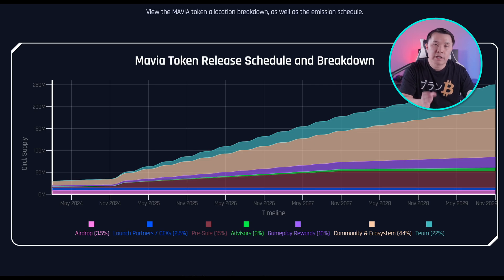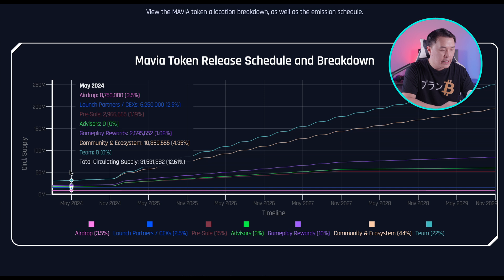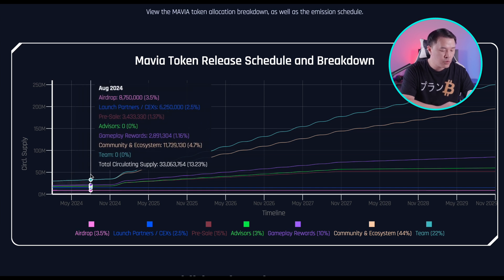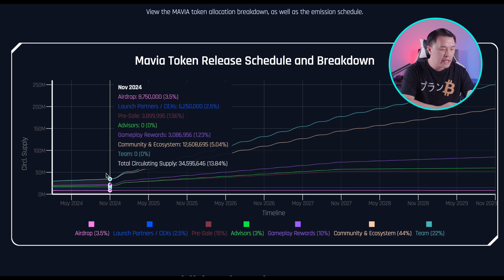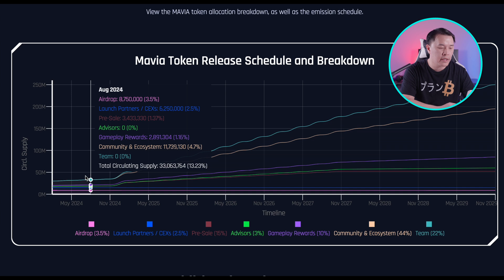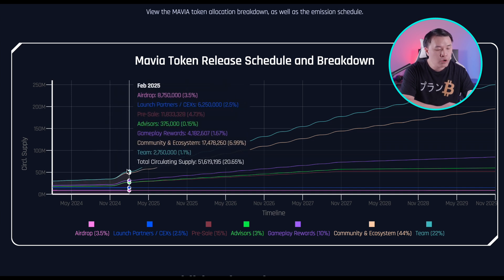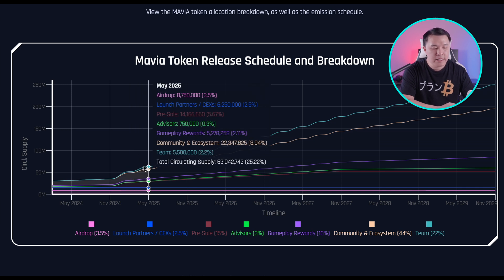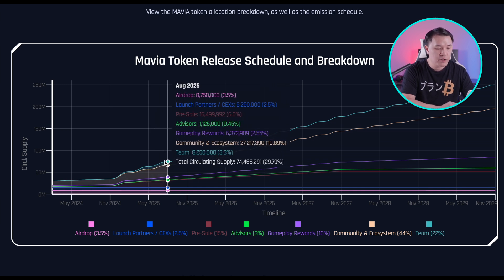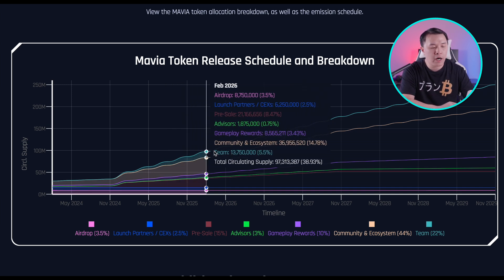Looking at MAVIA's emission schedule, I really like that they are transparent. From May 2024 to August 2024, it shows how many tokens are being unlocked — the total circulating supply goes from 13.23% to 13.8%. As you go on, unlocks become more aggressive. From February to May — three months — you go from 20.6% to about 25%, so that's a roughly 4–5% unlock. Every three months it's about a 5% unlock, which divided monthly is only 1–2%, so it should be okay. But as you go along, unlockings will increase and more tokens enter circulation.